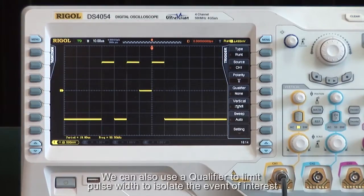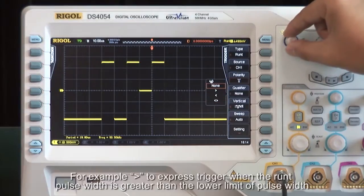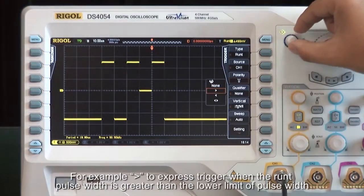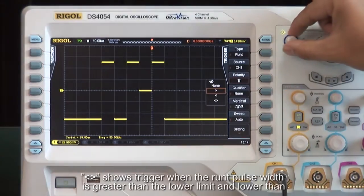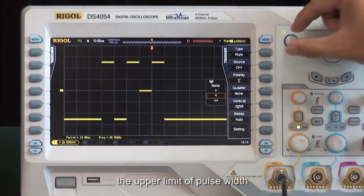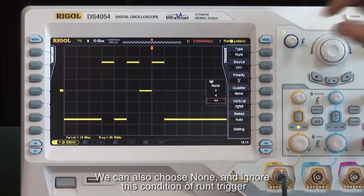We can also use a qualifier to limit pulse width to isolate the event of interest. For example, greater than will express triggers when the Runt pulse width is greater than the lower limit of our pulse width. In between will show triggers when the Runt pulse width is greater than the lower limit and lower than the upper limit of our pulse width. We can also choose None and ignore this condition of the Runt trigger.